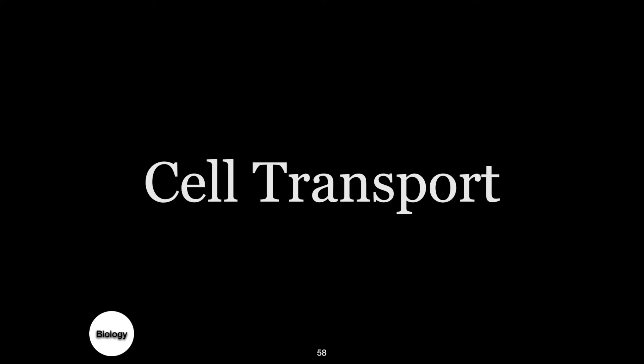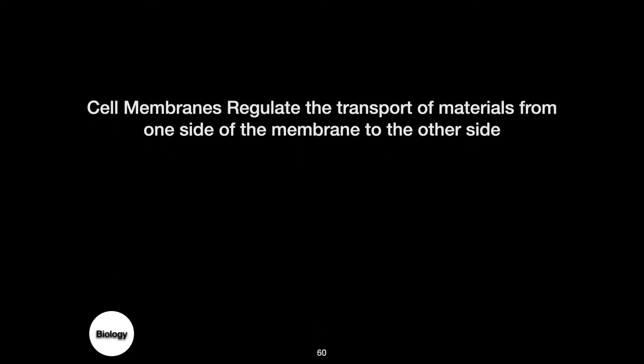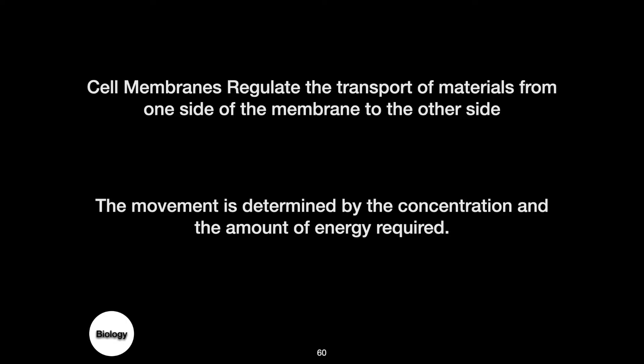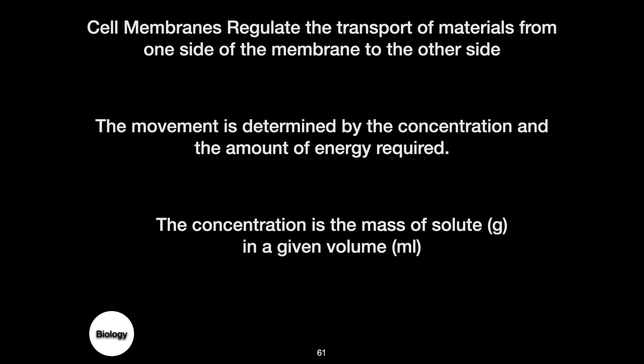In this lesson we're going to talk about cell transport. In our last lesson we talked about cell membranes and cell boundaries, and one of the functions of those cell membranes was to regulate the transport of materials from one side of the membrane to the other. The four functions were to regulate, separate, protect, and support. Regulation of materials across the membrane was the most important characteristic. That movement is going to be determined by the concentration and the amount of energy required. Concentration is simply a measure of the mass of solute in a given volume.